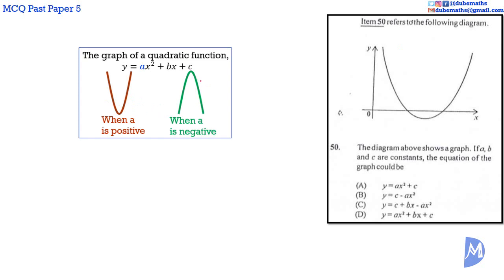And the reverse shape when the coefficient of X squared, A, is negative. Thus, the coefficient of X squared in this diagram must be positive. The answer must be either A or D.